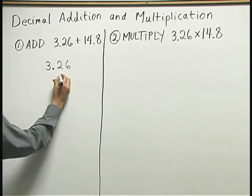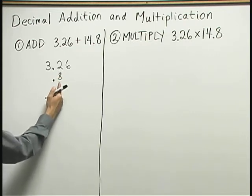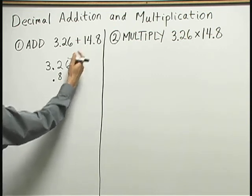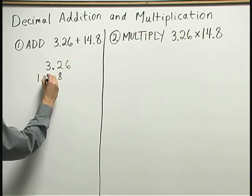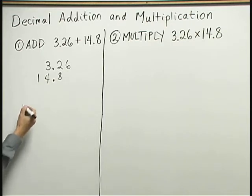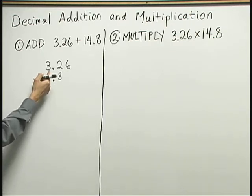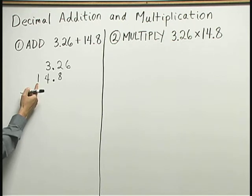So the decimal point for the 14.8 needs to be right below the decimal point for the 3.26. That means the 8 goes below the 2 in the tenths place and the 14 needs to be written out in front with the 4 below the 3 in the ones place. Notice the 1 sticks out all by itself.